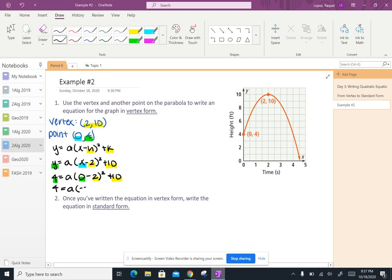0 minus 2 is negative 2 squared plus 10. And then I'm just going to move over here.